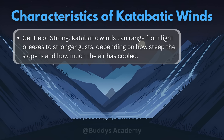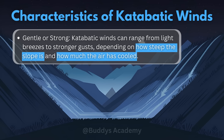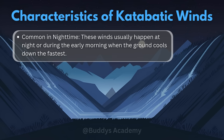There are two important factors that determine wind strength: the first is the gradient of the slope — that is, how steep the slope is — and the second is how much the air has cooled. The third characteristic is that katabatic winds are common during the nighttime. These winds usually happen at night or during the early morning when the ground cools down the fastest.